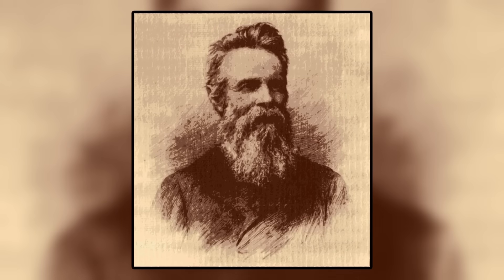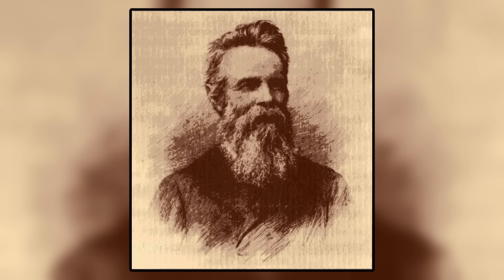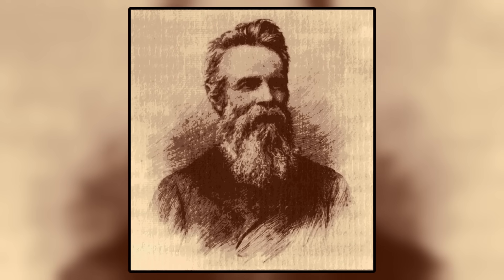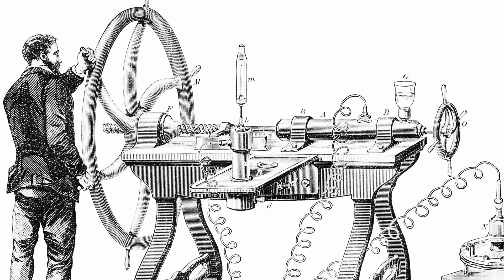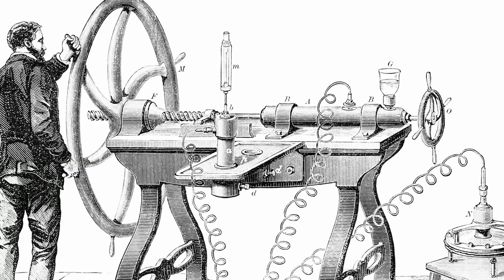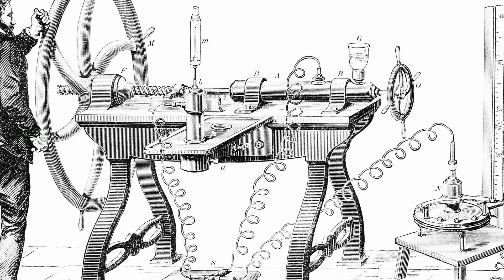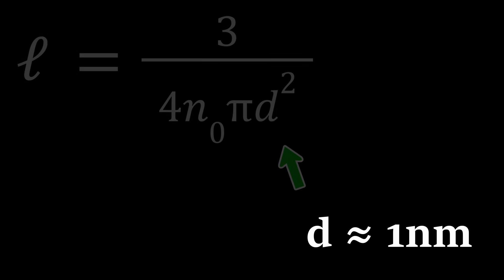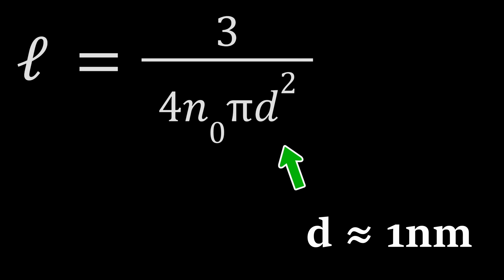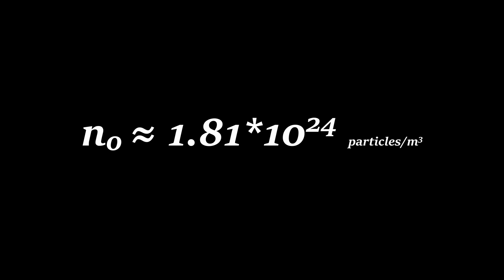Loschmidt had to estimate the value of this coefficient, though, for no gases had yet been liquefied, and wouldn't be for another 12 years, and this estimation gave him a value for d of about one nanometer. With this, he solved for n-naught, and he found a value of 1.81 times 10 to the 24th particles per cubic meter.